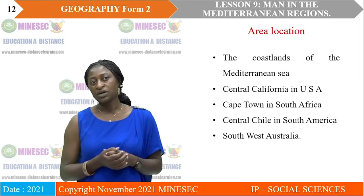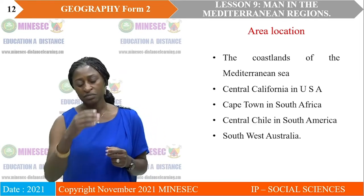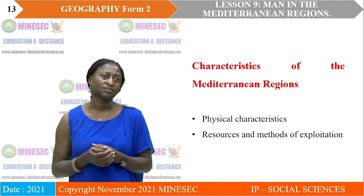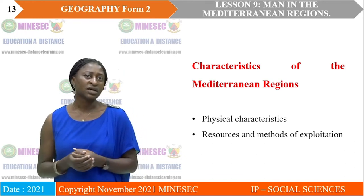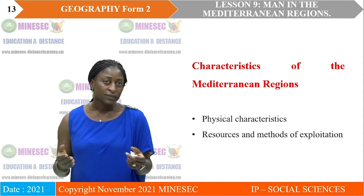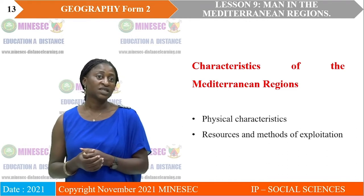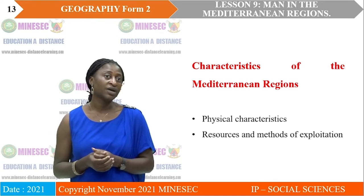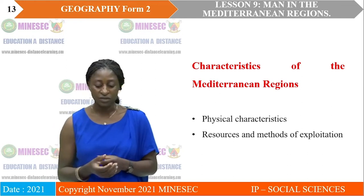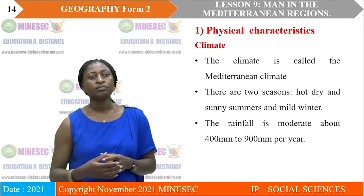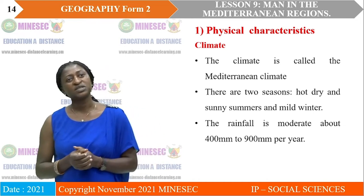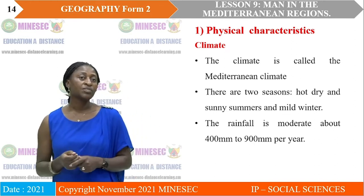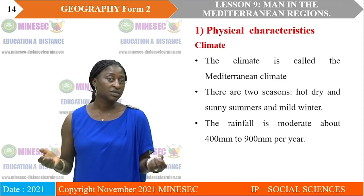With the area location as we have already seen on our diagram, we realize that the Mediterranean region has its own different characteristics. These include the nature of the area — the physical characteristics — and the different resources found in this area and how those resources are being exploited. Let's look at the physical characteristics of the Mediterranean region, starting with climate. The climate of this area is known as the Mediterranean climate.